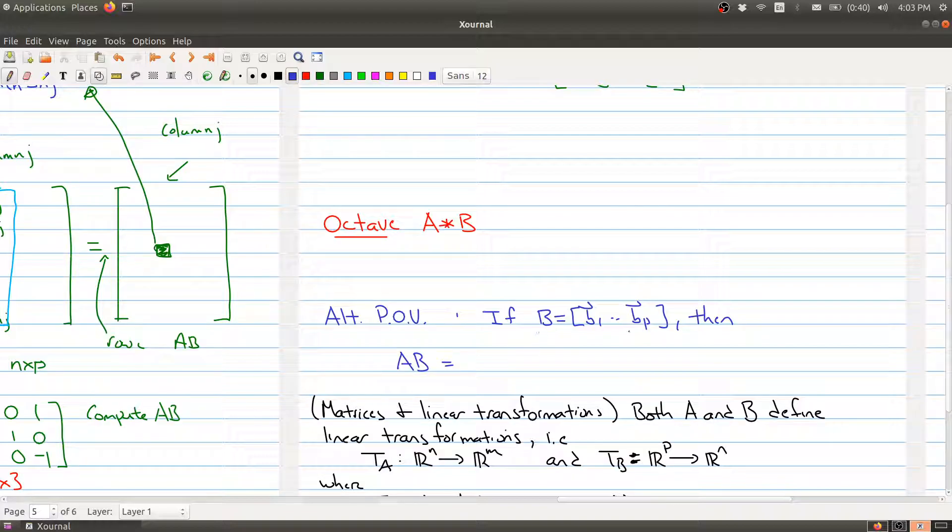If you think of the matrix B as being a series of column vectors, then A times B is simply the matrix that you're going to get where the first column is going to be the column that you get by multiplying the matrix A by the column vector B1. In the second spot, you'll get A times B2 all the way up to A times BP. So this ties back into what you've seen in chapter one about a matrix equation.